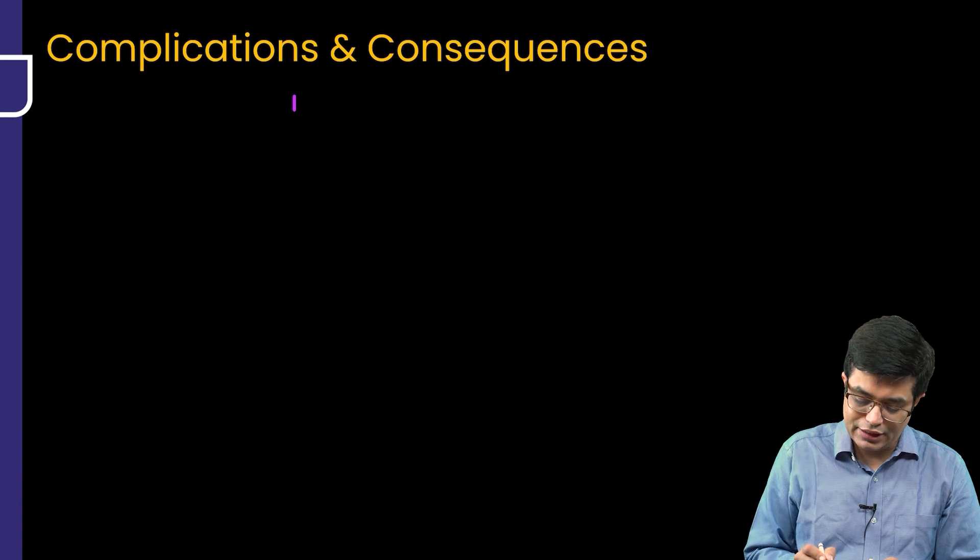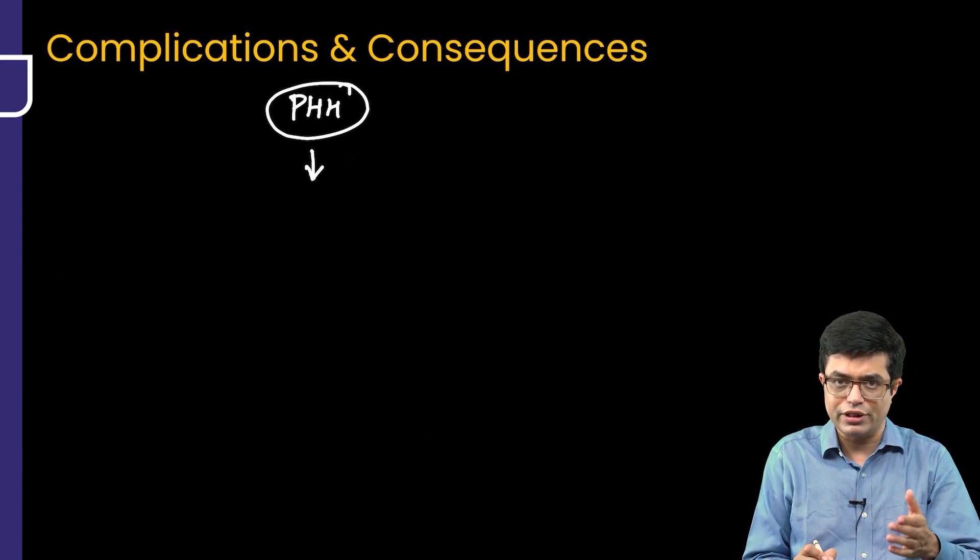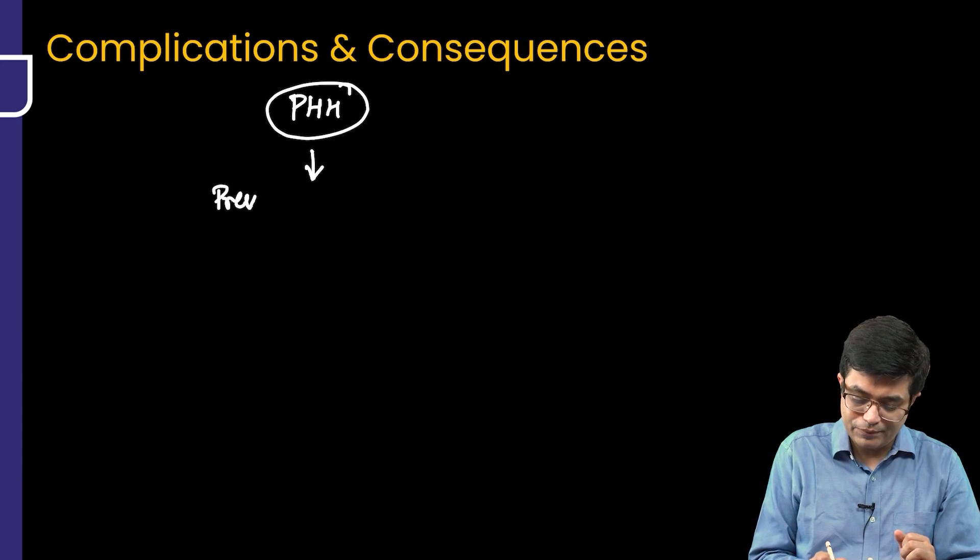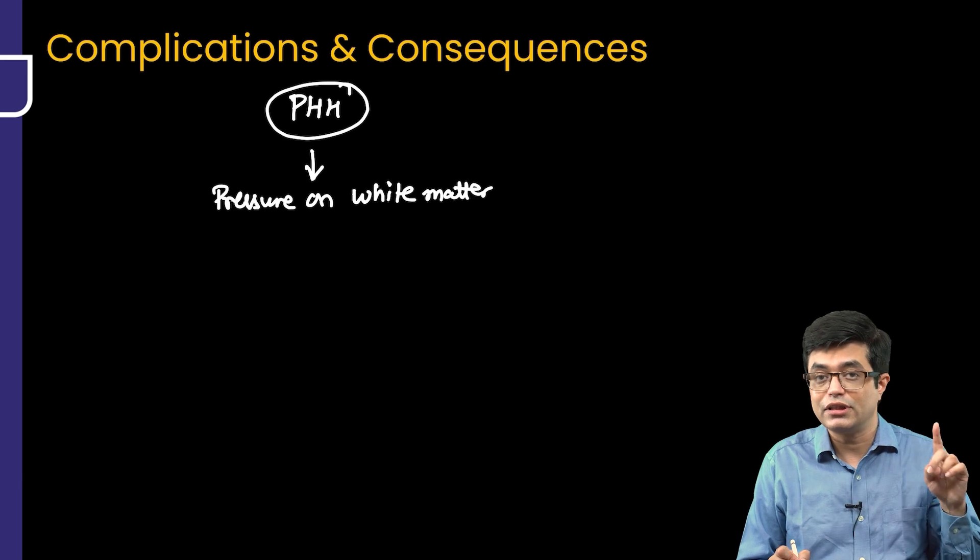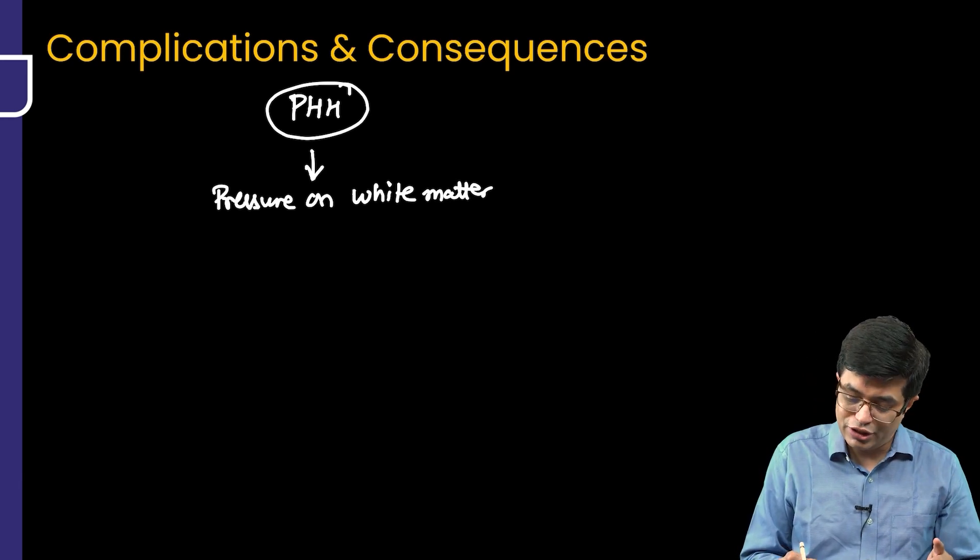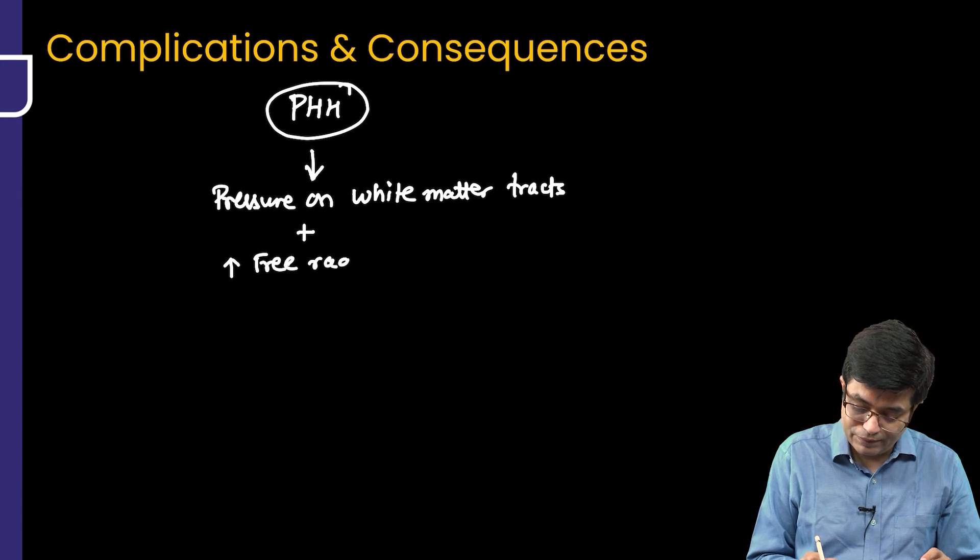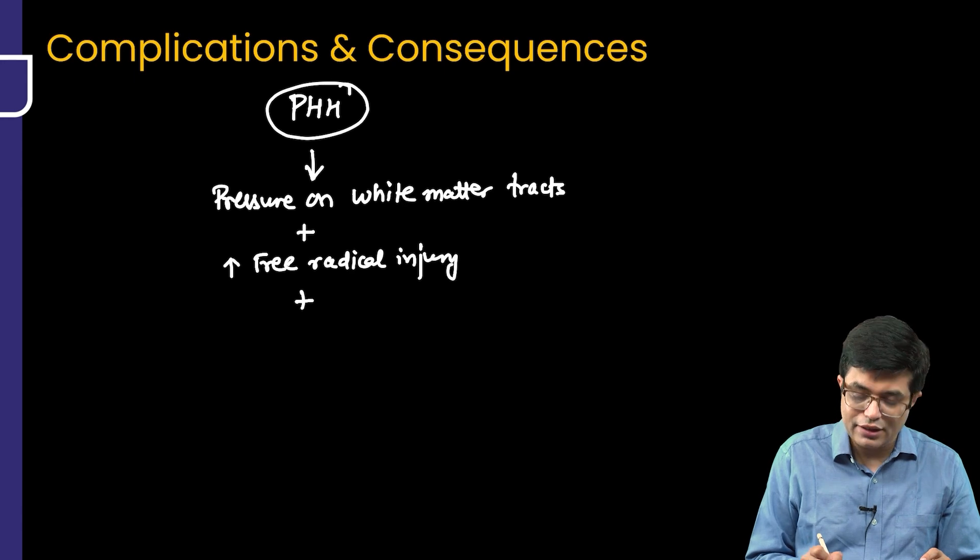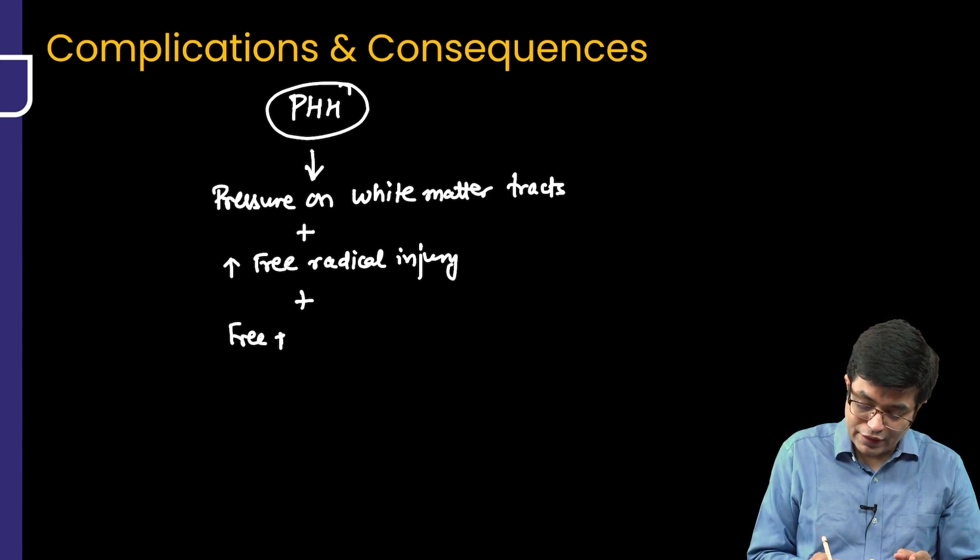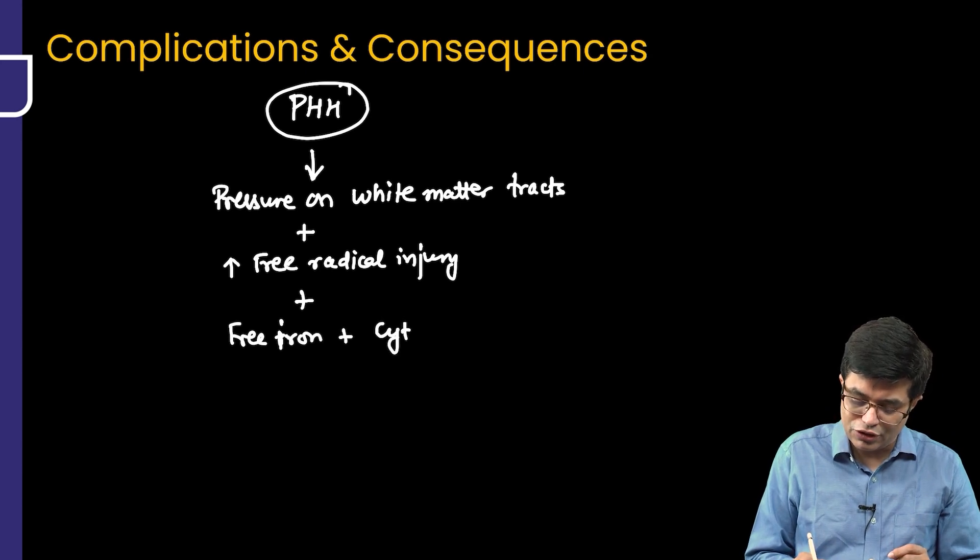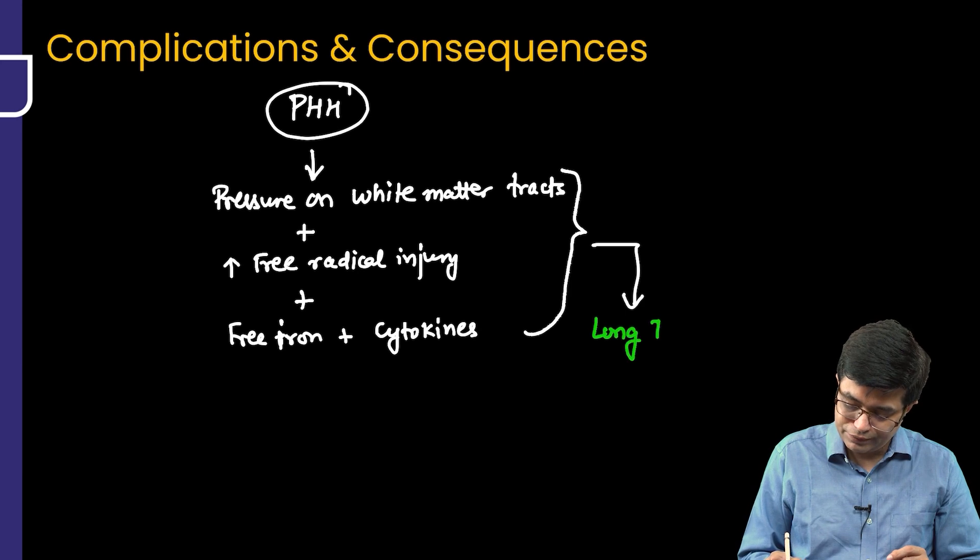My question to you is why is this PHH dangerous, especially the progressive PHH which is developing? The acute one is also dangerous, but PHH whether it is acute or progressive, it is going to cause pressure on the developing white matter tract. Remember that preterm brain continues to develop after birth as well and white matter tracts are still developing, they are immature. Pressure occurs on the white matter tracts plus there is increased free radical injury which is seen. There is extravasated blood which is there, macrophages will come, the body's own defense processes will come, they will try to degrade the iron. Some free iron will be released, there will be some inflammation happening because of the hemorrhage, so cytokines will be coming.